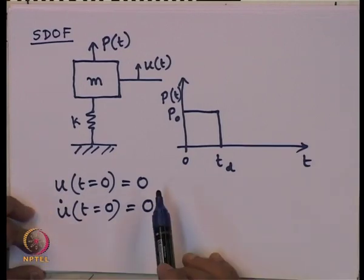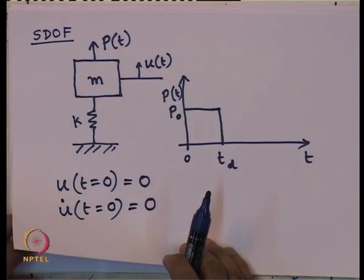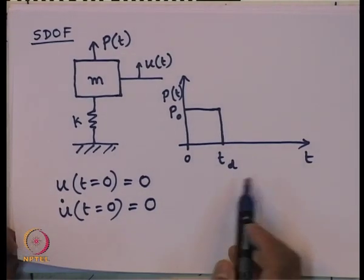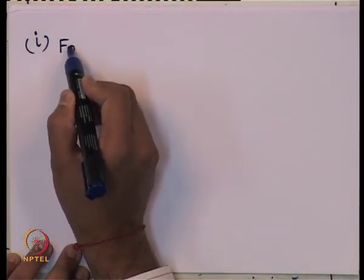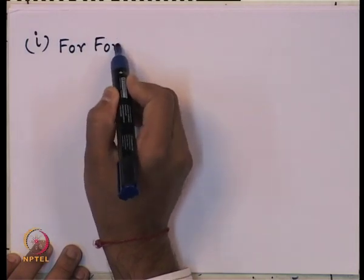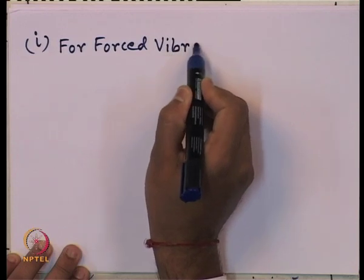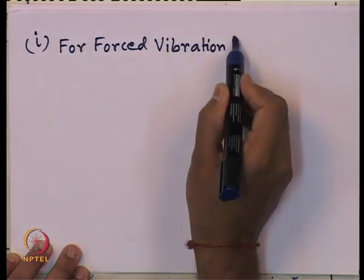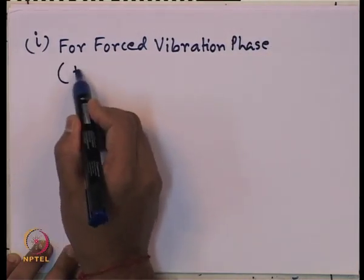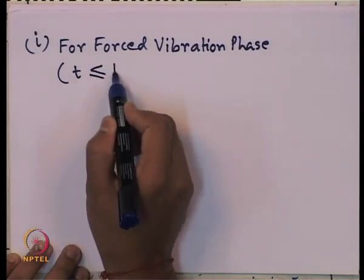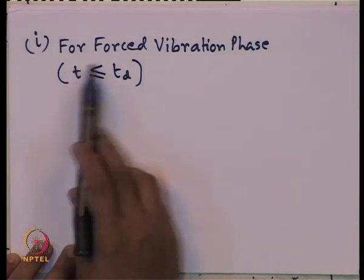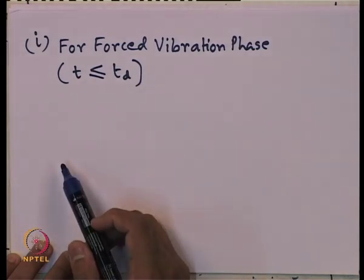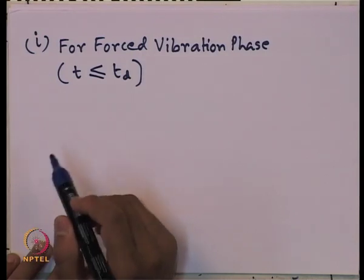The system has two phases: forced vibration from 0 to t_d, and free vibration beyond t_d. For the forced vibration phase (0 ≤ t ≤ t_d), the solution from our soil dynamics course is: u(t)/u_st = 1 − cos(ω_n · t), where u_st is the static displacement and ω_n is the natural frequency. In terms of the natural period T_n, this becomes: u(t)/u_st = 1 − cos(2π·t/T_n), valid for 0 ≤ t ≤ t_d.